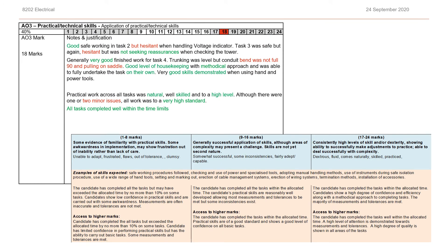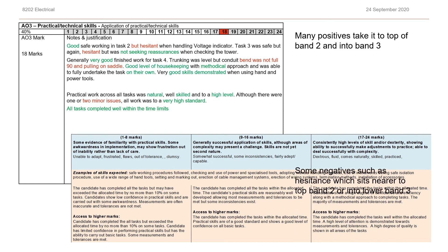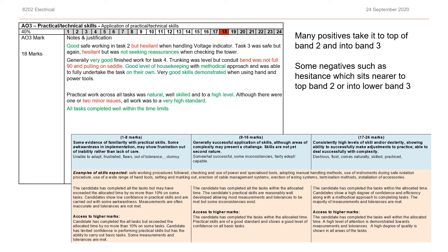When formulating a mark, look at the evidence captured on the CRF alongside the marking grids and see where the evidence falls within the band. For example, we can see here many positives to take the mark to the top of band two and into band three — positives shown in green, negatives in red. Some negatives such as hesitancy sit nearer the top of band two or just into the lower end of band three. But with many positives all round, that's probably going to sit just at the lower end of band three — for example, 18 marks.